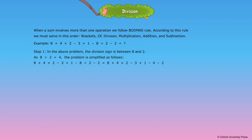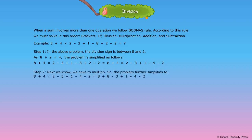Step 1: In the above problem, the division sign is between 8 and 2. As 8 divided by 2 is equal to 4, the problem simplifies to: 8 plus 4 multiplied by 2 minus 3 plus 1 minus 4 minus 2. Step 2: Next we multiply. So the problem further simplifies to: 8 plus 8 minus 3 plus 1 minus 4 minus 2.